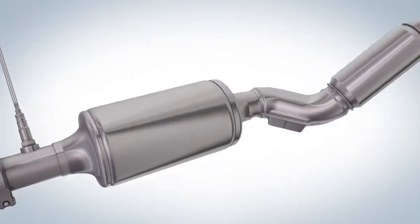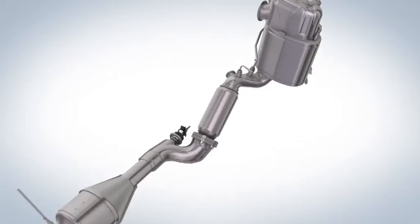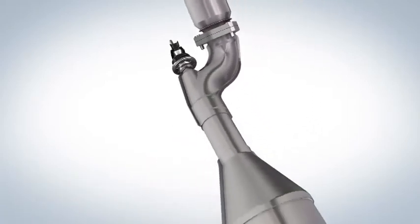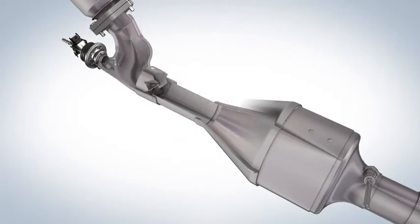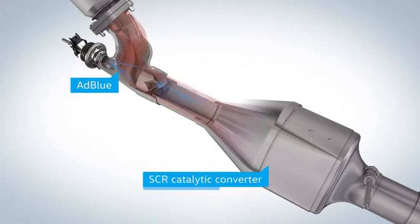Especially in larger vehicles, another technology is used: the SCR system. Here, AdBlue, a water-based urea solution, is injected into the exhaust gas. After its conversion, water and, again, nitrogen are generated in the SCR catalytic converter.